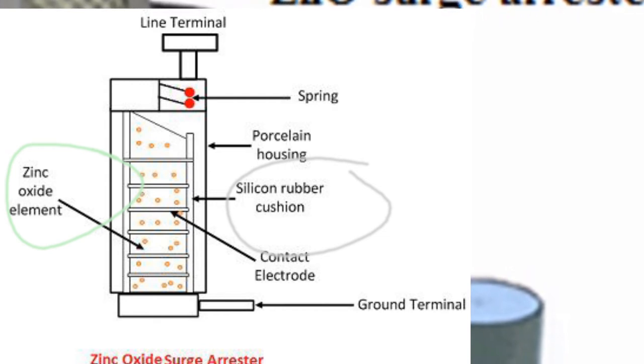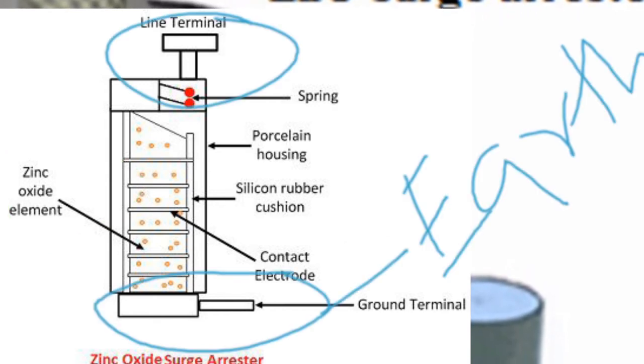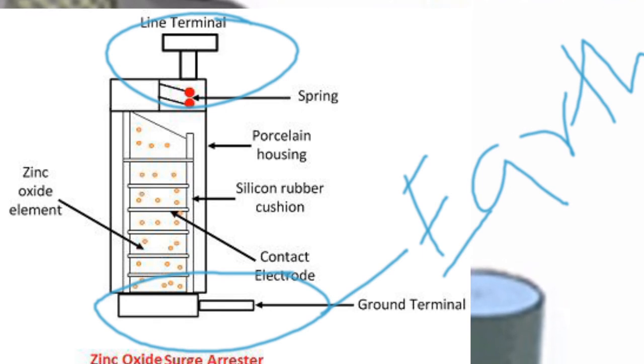This body is made up of a polymer housing which contains a silicon rubber push-in zinc oxide element. One end is connected to the line and the other is earthed.